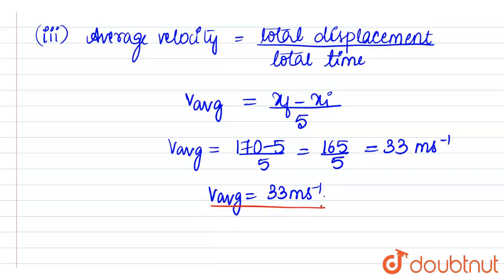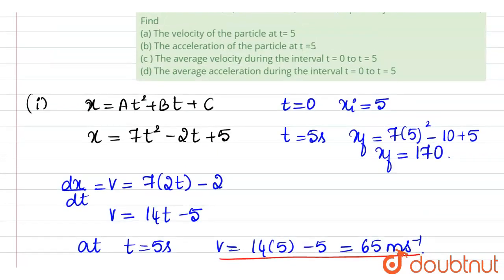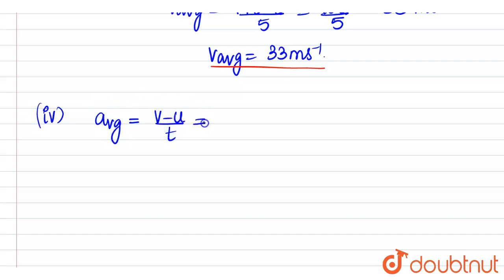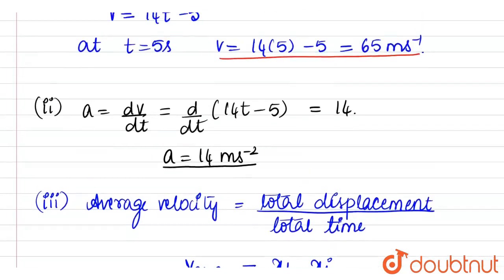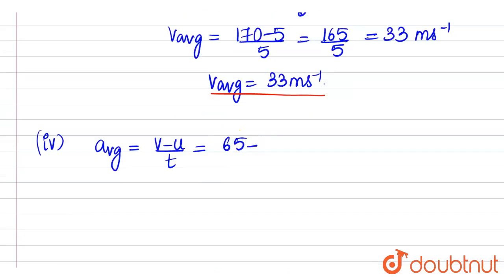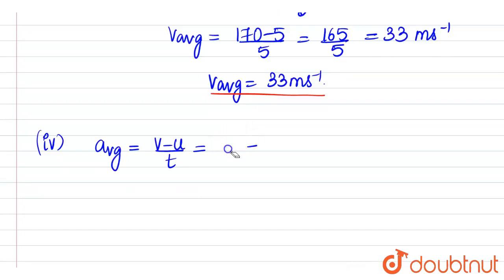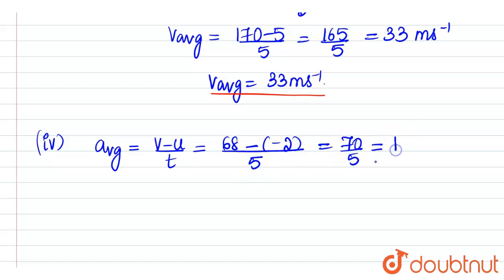In the fourth part of the question, the average acceleration during t equals 0 to t equals 5. Average acceleration is change in velocity divided by time, which is v minus u divided by t. Velocity at t equals 5 seconds we have already calculated as 68, minus velocity at t equals 0, which is minus 2. So this will be 68 minus of minus 2 divided by 5, which is 70 divided by 5, equal to 14 meters per second squared. So average acceleration will be 14 meters per second squared.